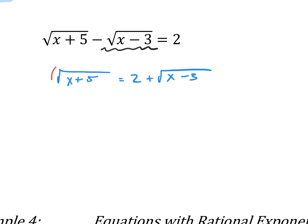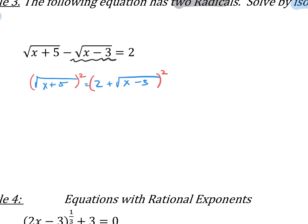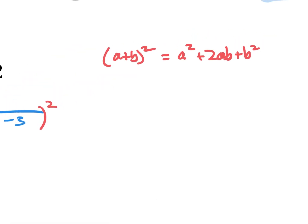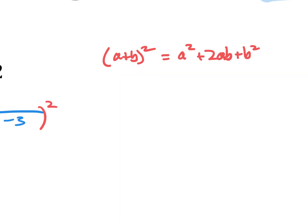Let's get rid of this square root first. The opposite of square rooting is squaring. Be careful — we've got to square the whole side. It's very tempting to just square this and square this separately. But remember, if we have a binomial like a plus b and we square it, we don't just get a squared and b squared. We get a squared plus 2ab plus b squared. If you want to convince yourself, write out a plus b times a plus b and multiply it all out — you'll end up with that. So a plus b squared is not just a squared plus b squared; you've got to have the 2ab.